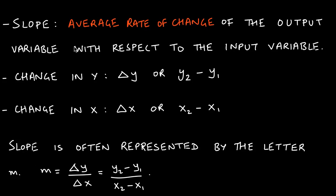So m, which represents the slope or the average rate of change, is a change in the output variable divided by a change in the input variable — in other words, when the input variable changes by a certain amount, how much does the output variable change? Change in y can also be represented as y2 minus y1, and change in x as x2 minus x1. This ensures you understand that m is the average rate of change of the output with respect to the input.